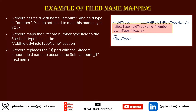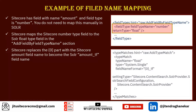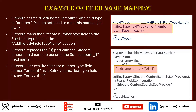Sitecore replaces the `{0}` placeholder in the field name format with the actual field name. So the Solr field name format for a float is `{0}_tf`. Since the Sitecore field is `amount`, the resulting Solr field name becomes `amount_tf`. This is how the Sitecore field `amount` is indexed in Solr as the dynamic float field `amount_tf`.